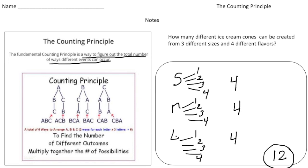So for example, we have small, medium, and large. That's three, and we have four different flavors, right? So when I do three times four, we get our answer of 12. So multiplication is key when you're dealing with the counting principle.